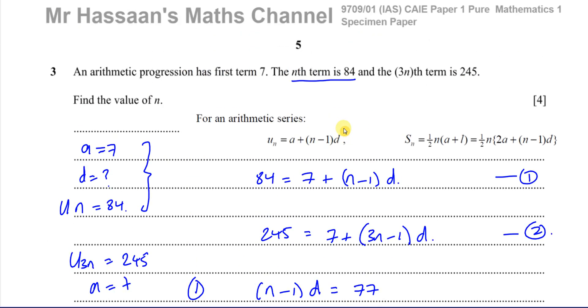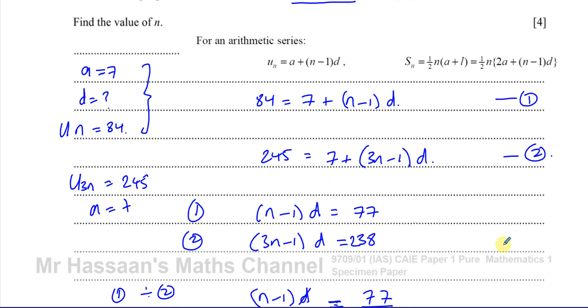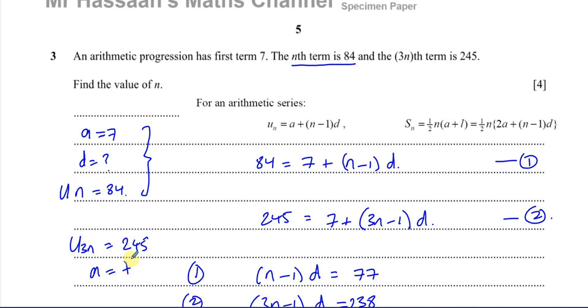And that solves this equation. That solves this problem. We found the value of n. So we've set this up, as I said, by using this formula here which is dealing with the term. We're not dealing with the sum. They didn't tell us about the sum of the terms. They told us about a particular term. The nth term is 84 and the 3nth term is 245. Don't get confused by this being in this algebraic form. If it says the nth term is 84, it might say the 8th term is 84. Then we know that the 8th term is going to be when n is equal to 8. And that's going to equal to 84. And the 3nth term, they just use this algebraic expression. So you just replace the n with whatever that term is in the formula.